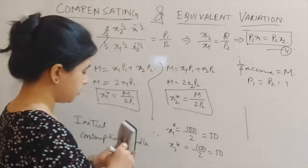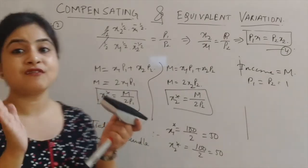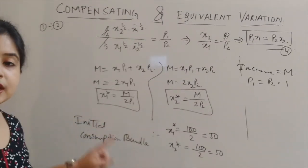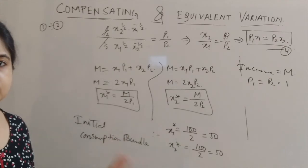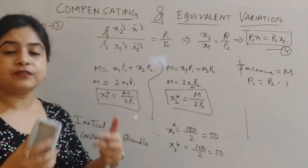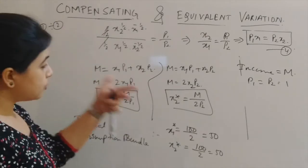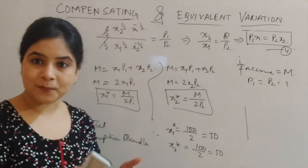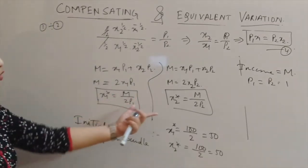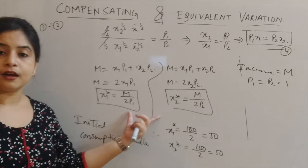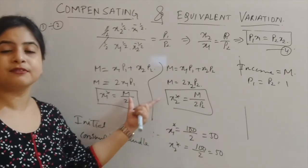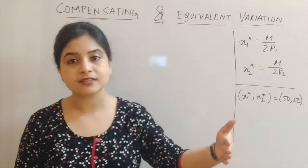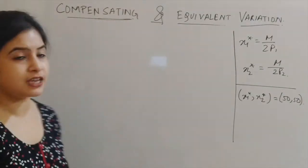We have not yet entered the compensating variation or equivalent variation area. We first found the initial consumption bundle before the price change. These two consumption values — x1 star = 50, x2 star = 50 — are the key information we require. Now let's move towards the compensating variation portion.